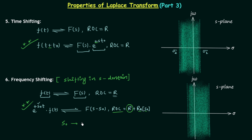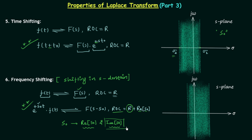Let's understand why the ROC becomes R plus the real part of s₀. Here s₀ is a complex number with a real part and an imaginary part. The initial region of convergence for F(s) is a strip — extending between values s₁ and s₂ on the real axis, and from minus infinity to plus infinity in the vertical (imaginary) direction. When we perform frequency shifting, this ROC shifts by s₀. The imaginary part of s₀ would shift the ROC vertically, but since the strip already extends from −∞ to +∞ vertically, this vertical shift changes nothing.